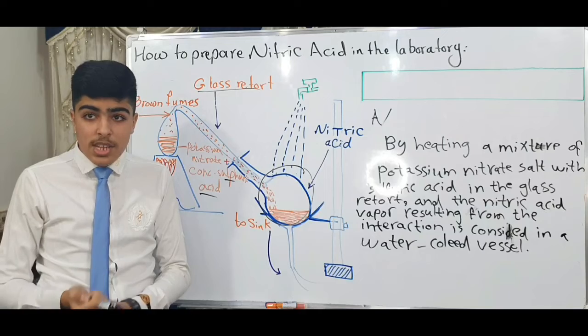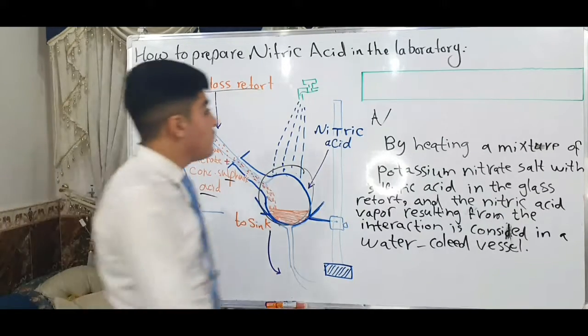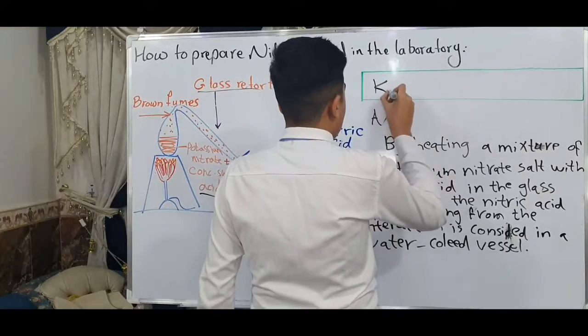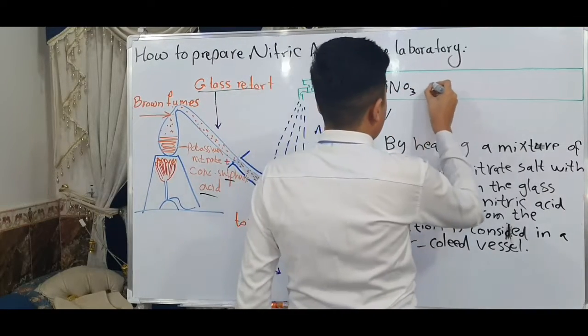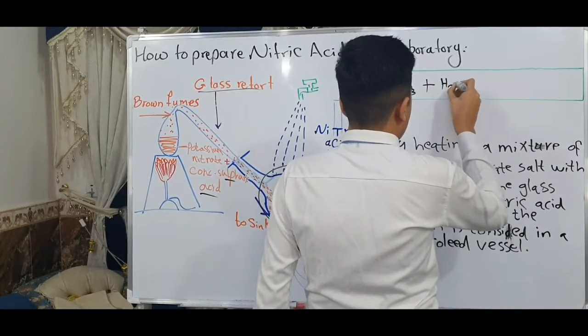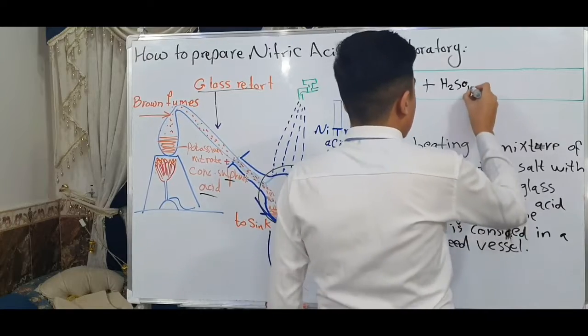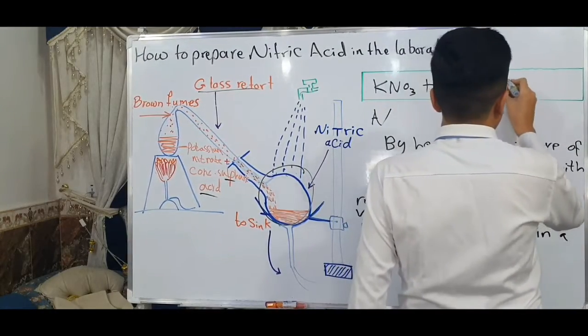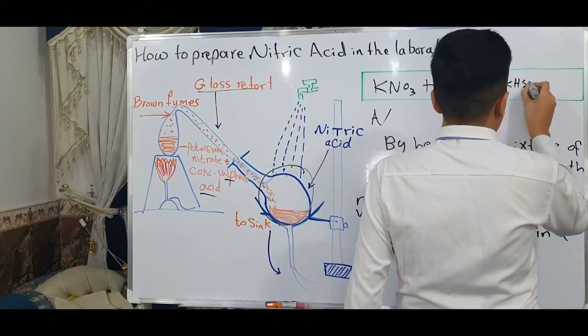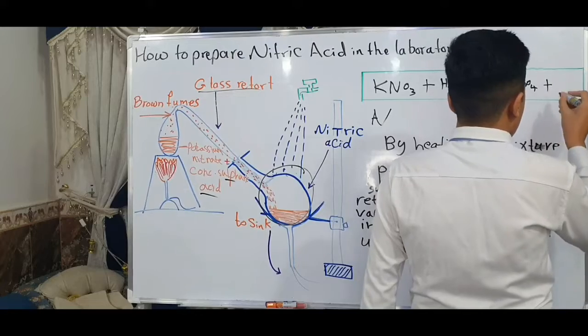The preparation of nitric acid in the laboratory. The chemical equation is: KNO3 plus H2SO4 equals KHSO4 plus...